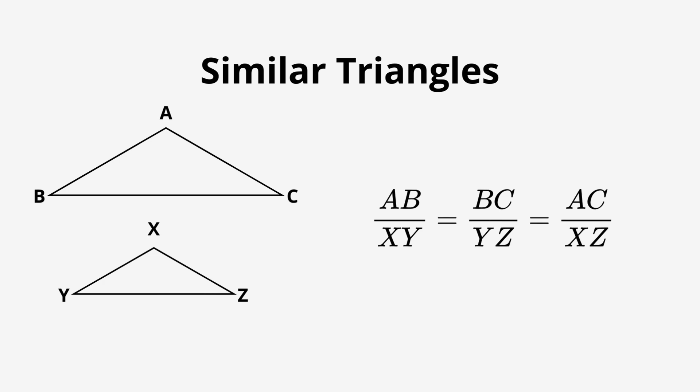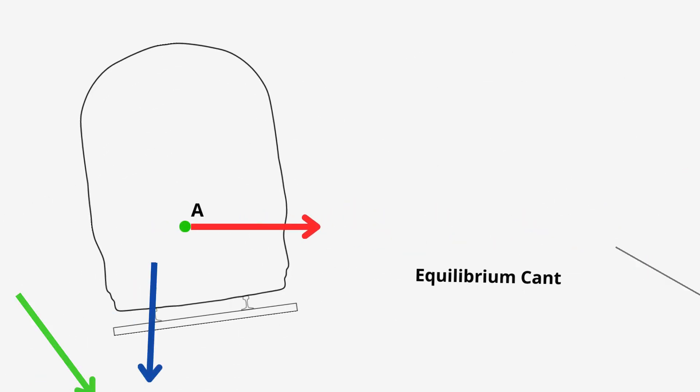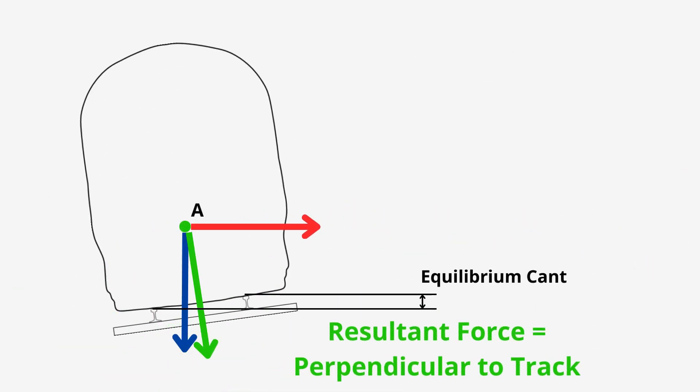And guess what? The three triangles we have on our diagram are similar. So, this means we can use the similarities and the known parameters we have to help solve for the unknowns we have. Make sense? At the beginning of the video, I spoke about equilibrium and how it's a state of balance. I also spoke about how at equilibrium cant, the overall force was perpendicular to the plane of the track. Let's look at our components.